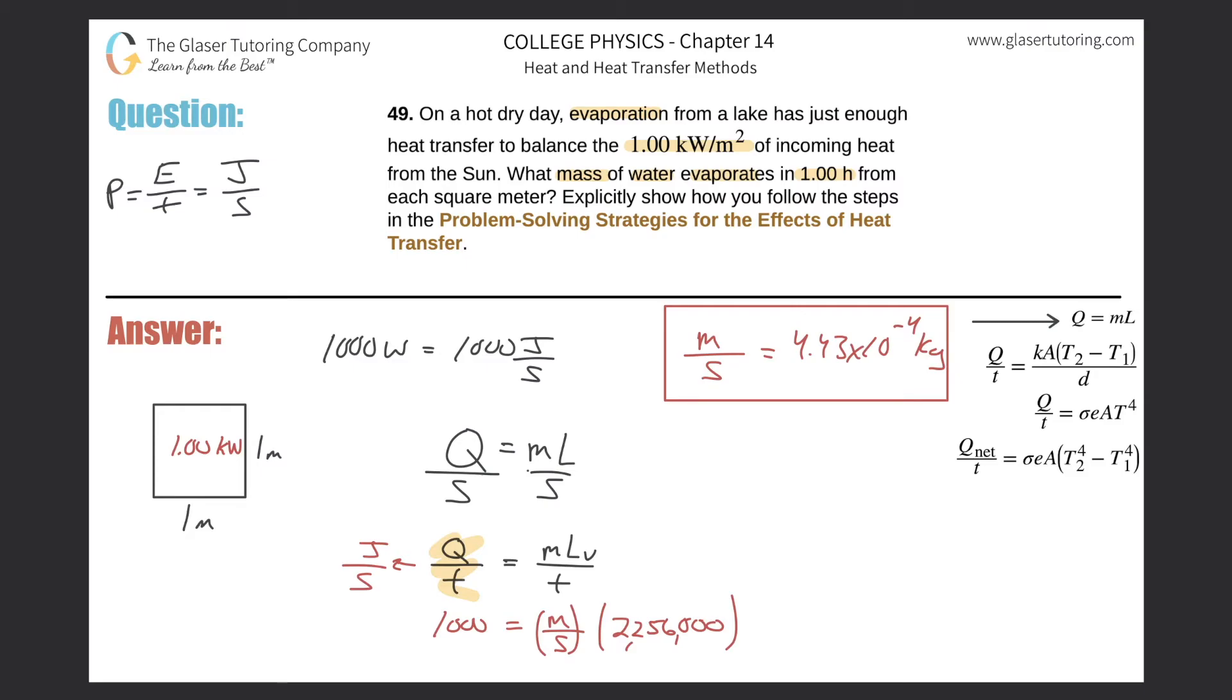So here we go: 4.43 × 10⁻⁴. Sorry, if you notice I get a little loopy when I've been doing this for a while—imagine talking to a computer screen for a few hours. This is kilograms per second, that's really what it is.